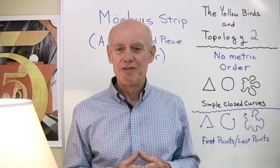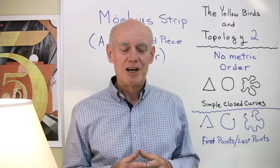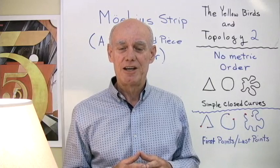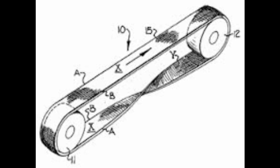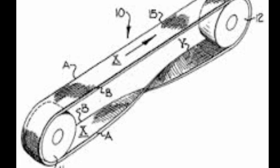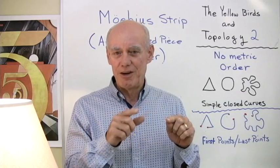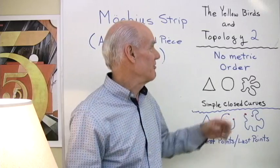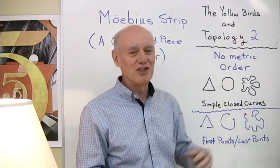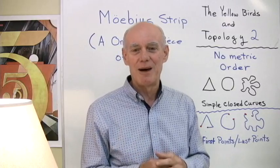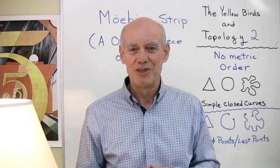Also, in the 1950s, the B.F. Goodrich company patented a conveyor belt that was a Mobius strip because they thought by making that one twist and having one long side instead of two shorter sides, they would cut down on the wear on their conveyor belts. So in any case, there's a follow-up to the Yellowbirds, Topology 2, and one of my favorite little applications in mathematics, the Mobius strip.